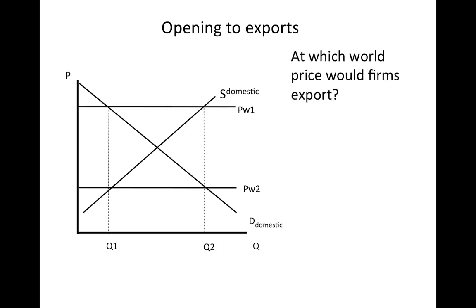If we have the opportunity to export, let's imagine what price would result in exports actually leaving the country. Consider two possible international prices: PW1 and PW2. Firms would be willing to go to all the trouble of exporting — going through customs, finding consumers abroad, dealing with new languages — only if the price abroad was better than the price at home. So PW1 has got to be greater than the autarky price in order for firms to go to all this trouble.